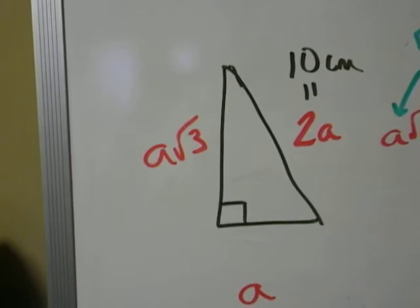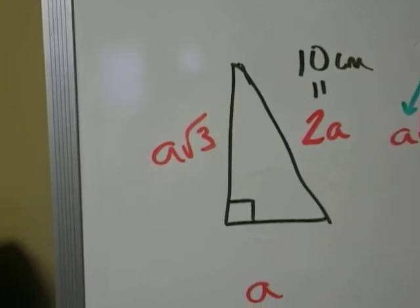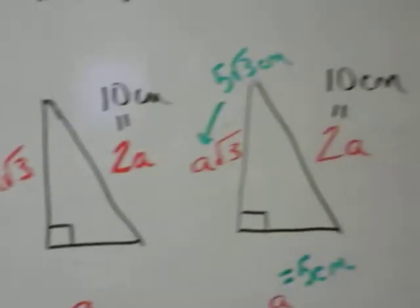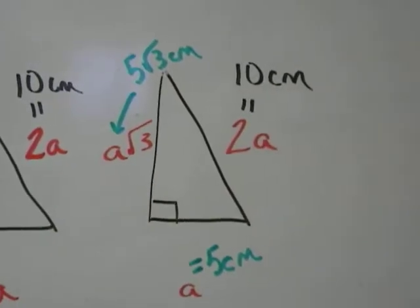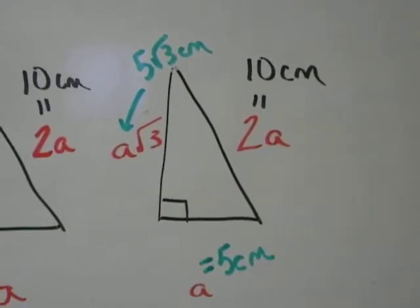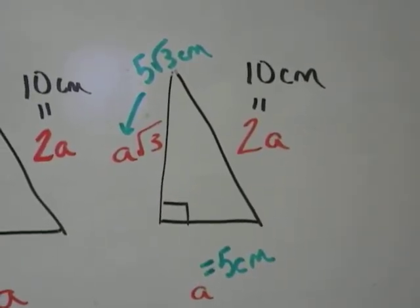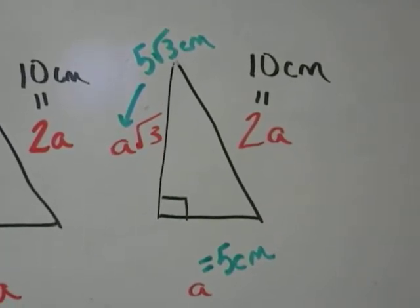Well if 10 equals 2A, how much is A? That's right. The A would be 5 centimeters. And so when I plug the 5 in on the A radical 3 that tells me that the apothem is 5 radical 3 centimeters.